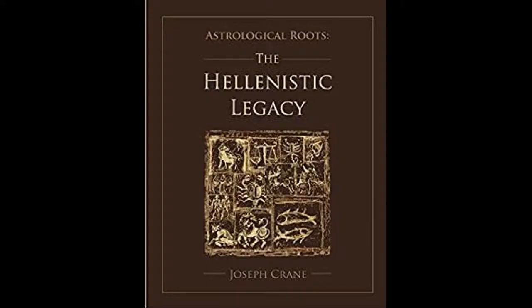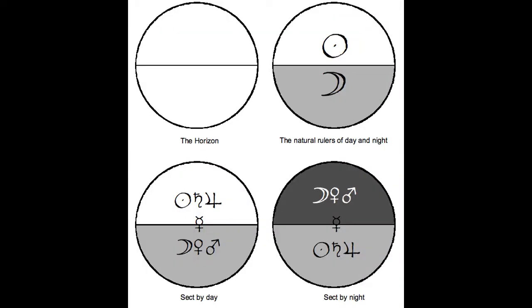Hellenistic astrologers categorize charts according to their sect. A diurnal or day chart has the sun above the horizon, the ascendant-descendant axis. And a nocturnal or night chart has the sun below the horizon.